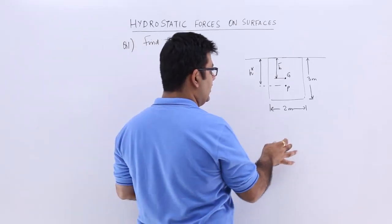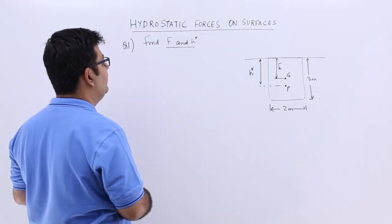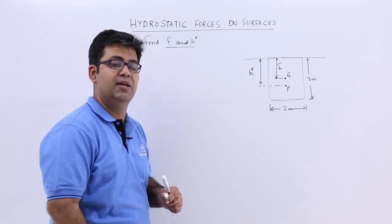The rectangle is of 2 meter width and 3 meter depth and we need to find the total pressure force and the location of the center of pressure.